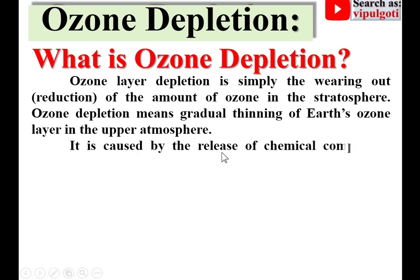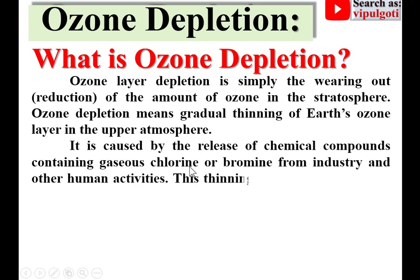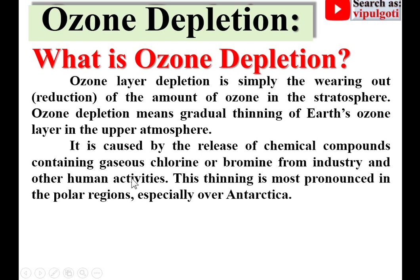Ozone depletion is caused by the release of chemical compounds containing gaseous chlorine or bromine from industry and other human activities. This thinning is most pronounced — more severe — in the polar regions, especially over Antarctica.